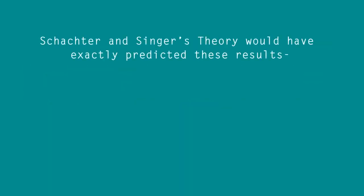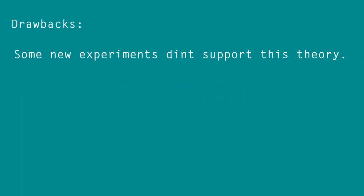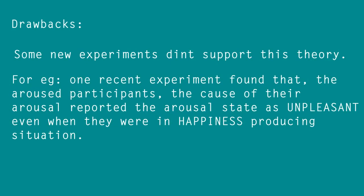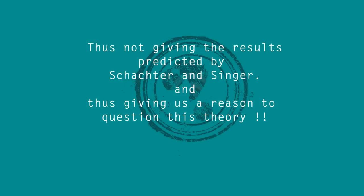In all cases, the actual cause of arousal was the drug epinephrine and the physical symptoms were identical. The only difference between the two groups was their exposure to two different contexts — the angry and happy man. Schachter and Singer's theory would have exactly predicted these results: physiological arousal has to be interpreted cognitively before it is experienced as a specific emotion. However, some newer experiments didn't support this theory — aroused participants reported their arousal as unpleasant even in happiness-producing situations, giving reason to question this theory.